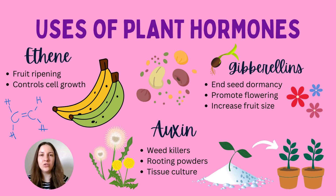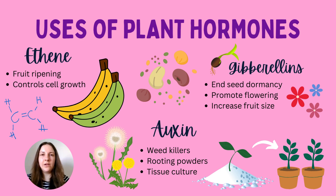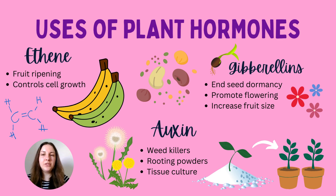Another hormone is gibberellin, which ends seed dormancy. Seeds in a packet stay dormant — they don't sprout — until they receive warmth, water, and gibberellin, which triggers germination. Gibberellins also promote flowering in plants and increase fruit size, so gibberellin and ethene can work together in agricultural contexts.